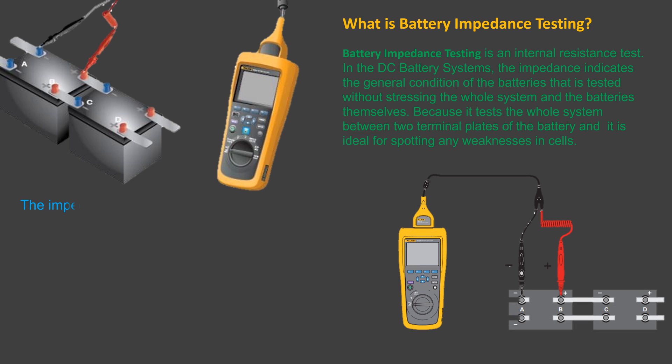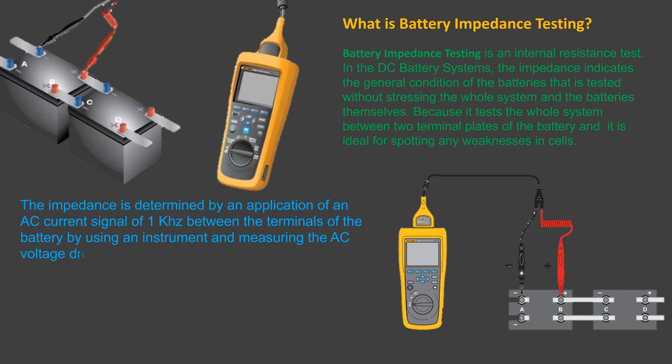The impedance is determined by application of an AC current signal of 1 kHz between the terminals of the battery by using an instrument and measuring the AC voltage drop across the battery, and then calculating the impedance by use of Ohm's law.